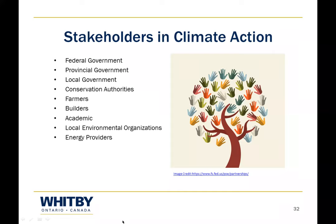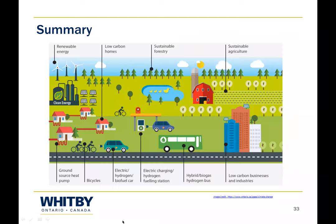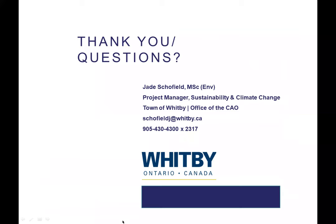As I start to wrap up, it is important that climate change action cannot be championed by one body or one government agency. Stakeholders in climate action include the federal government, provincial government, local government, conservation authorities, farmers, builders, academics, local environmental organizations, and energy providers. If we really do want to take true climate change action, we need to consider renewable energy, low-carbon homes, sustainable forestry, sustainable agriculture, active transportation, clean fuel transportation, clean local transit, and low-carbon businesses and industries. Thank you all — if you have any questions, I'd be happy to take them.